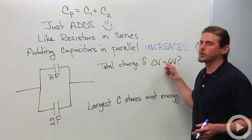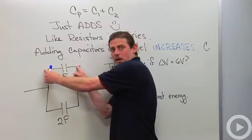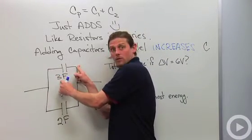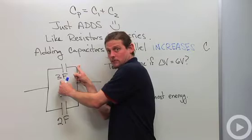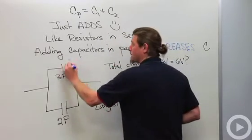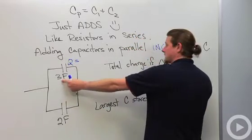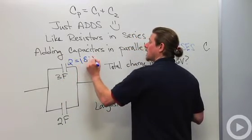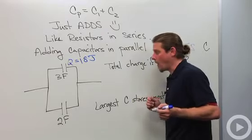If the potential difference is 6 volts, then it must be the potential difference across the 3 farad capacitor. So that means that the charge held on the 3 farad capacitor is going to be potential difference times capacitance, 18 coulombs.